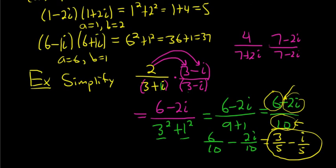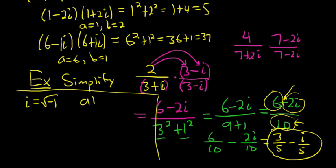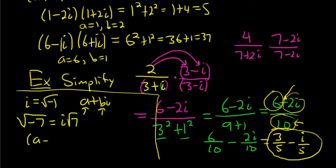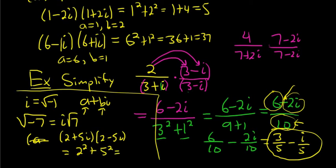That was a quick video on complex numbers. To recap: i is the square root of negative 1, the imaginary unit. A complex number is written as a plus bi, where a is the real part and b is the imaginary part. Whenever you have a negative inside a square root, turn it into an i. When multiplying a complex number by its conjugate — like (2 plus 5i)(2 minus 5i) — square the a and square the b and add them. When dividing, multiply by the conjugate and proceed.